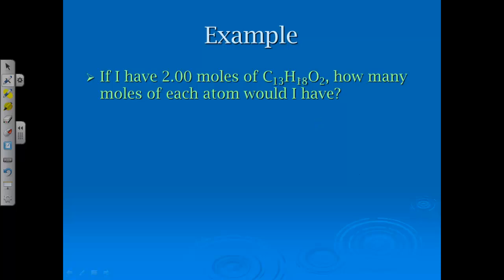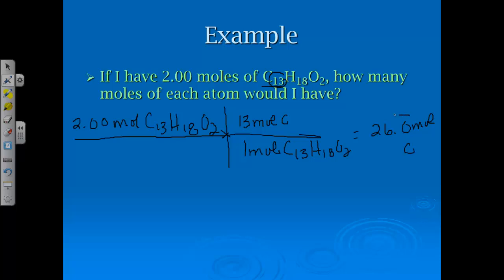For example, if I had two moles of ibuprofen, how many moles of each atom would I have? Well, I would solve that by doing this this way. If I had 2.00 moles of ibuprofen, and yes, we're back to labeling all the boxes, making sure that we have everything labeled correctly. If I first look at carbon, I have 13 moles of carbon, and that simply comes from the subscript, and every one mole of ibuprofen.